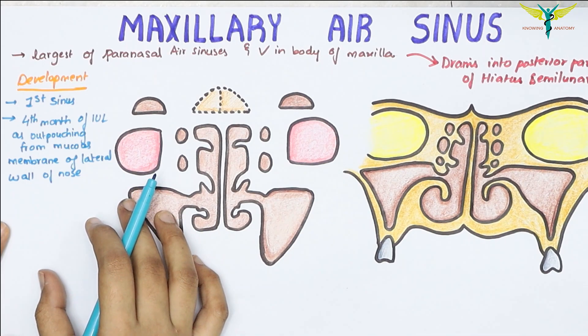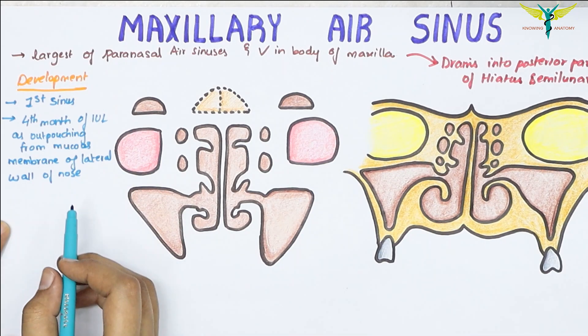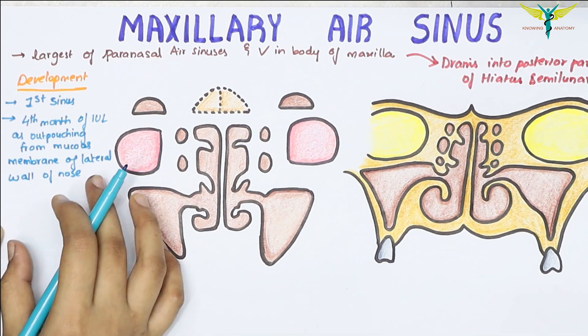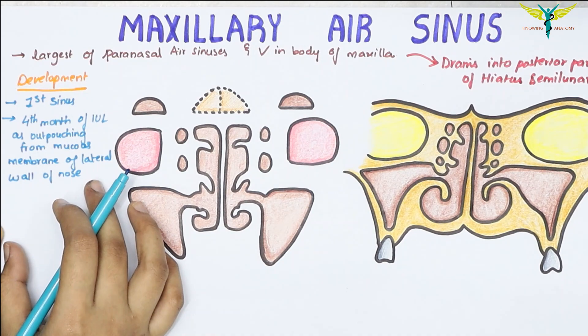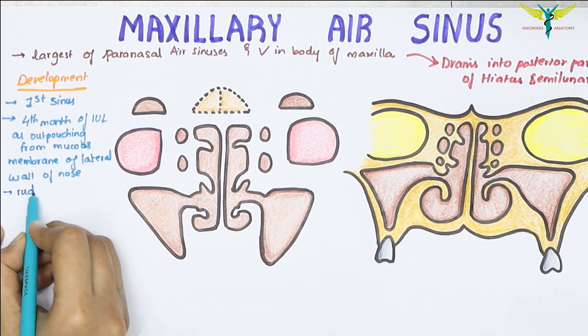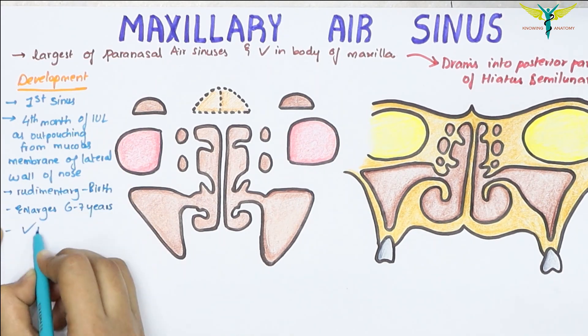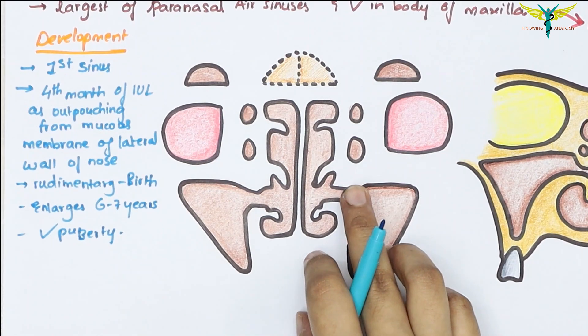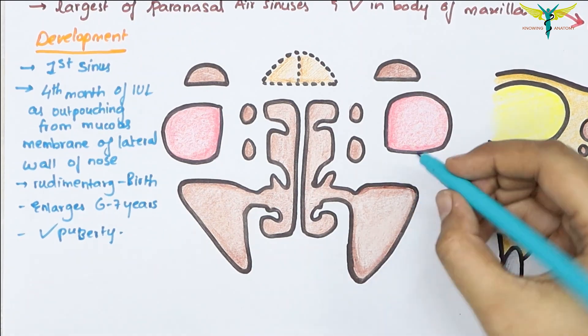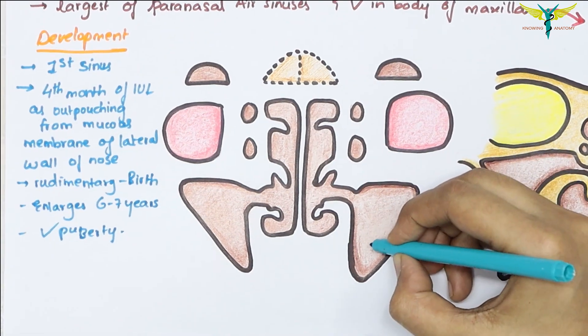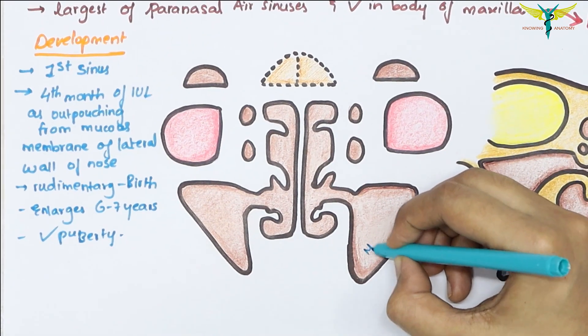The maxillary air sinus is rudimentary at birth and it enlarges rapidly during the sixth and seventh years, and it becomes fully developed at puberty, that is after the eruption of the permanent teeth. In this diagram, these are the maxillary air sinuses.